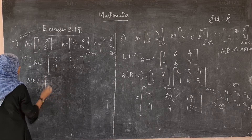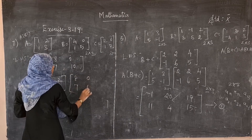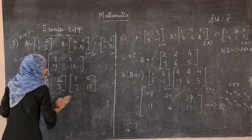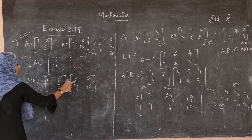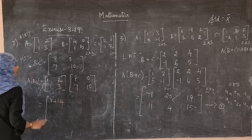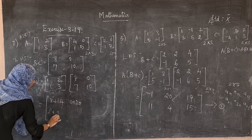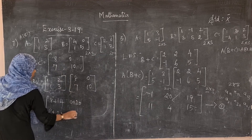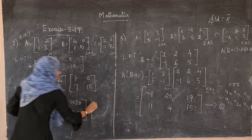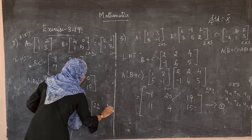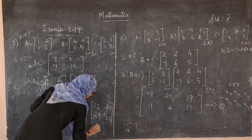Now compute A×(BC): A = [1,2;1,3] and BC = [8,0;7,10], both 2×2. A11 = 1×8 + 2×7 = 22; A12 = 1×0 + 2×10 = 20; A21 = 1×8 + 3×7 = 29; A22 = 1×0 + 3×10 = 30. So A(BC) = [22, 20; 29, 30]. Let this be result 1.